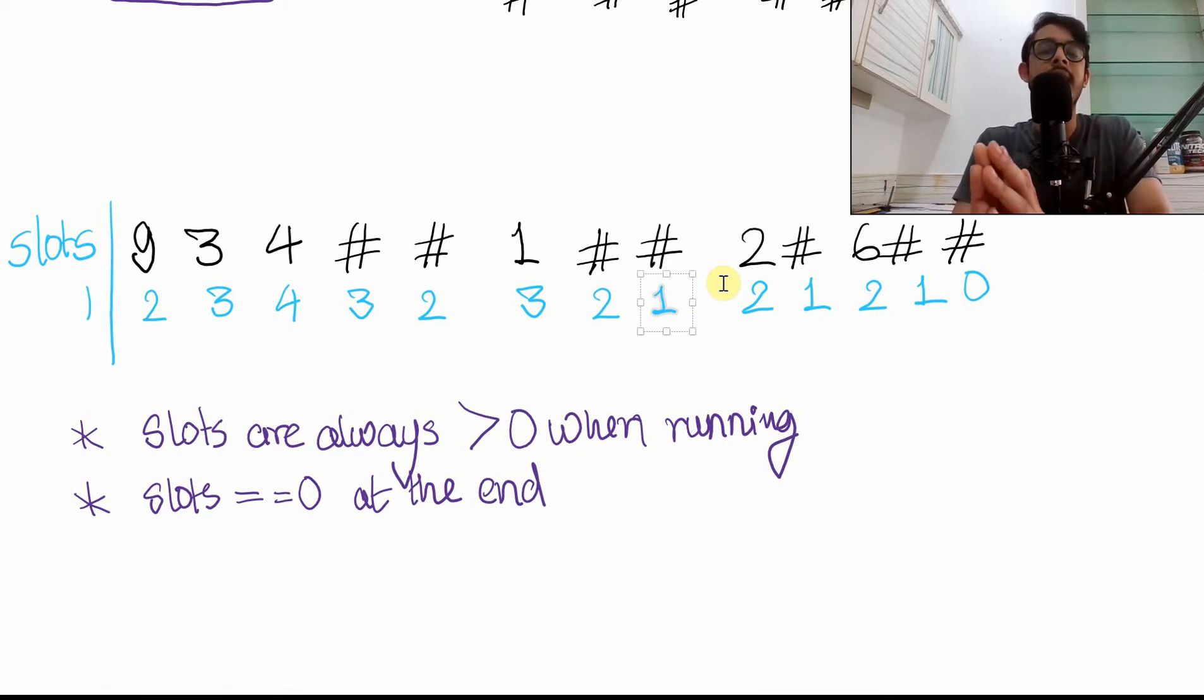because as soon as you encounter a zero, you can say that I cannot explore any more slots because I don't have any more spaces to fill. Regardless of how many hashes or digits there were, you just have to exit right away. We don't have any more slots and this looks like an invalid tree. So slots always have to be greater than zero while running. If there are less than equals to zero, we exit.